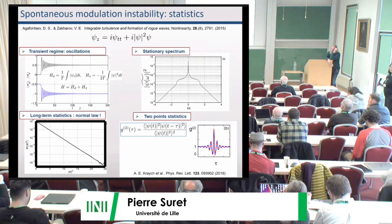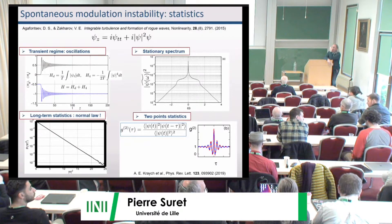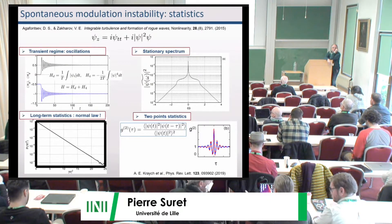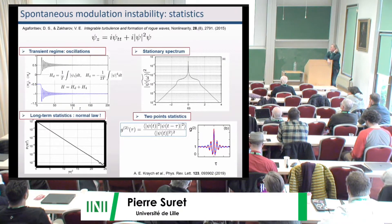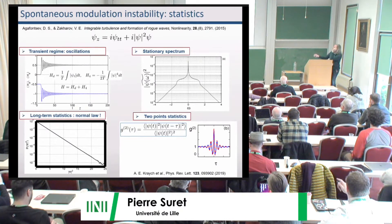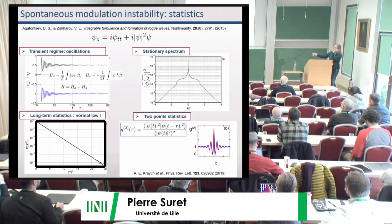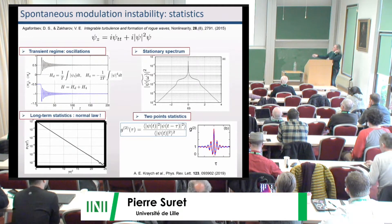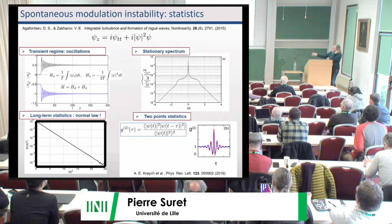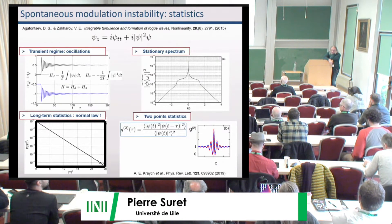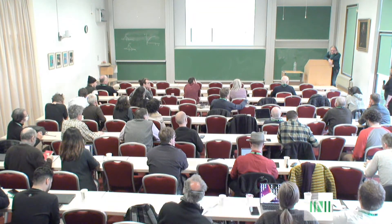A final question asked whether the dynamics of G2 towards the steady state has been studied. The speaker confirmed they have extensive simulations but no theoretical description. The oscillation of the kurtosis corresponds to the oscillation of G2 at zero lag, which is proportional to the nonlinear part of the Hamiltonian. There seems to be a slow desynchronization of the phases of the norming constants, but the precise understanding remains unclear — this is ongoing work with Agafontsev and Gelash.